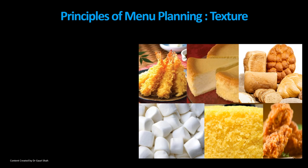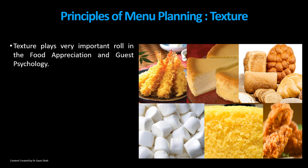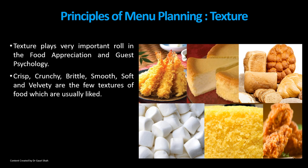Texture plays a very important role in food appreciation and guest psychology. For example, if it's raining heavily, all of us would like to eat crunchy pakodas with a hot warm tea. Or for a soothing romantic evening, we would prefer something smooth and creamy. The crispy, crunchy, brittle, smooth, spongy, soft, and velvety are the textures usually liked by consumers. It is definitely important to offer as many different textures as possible in one menu.